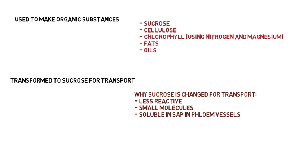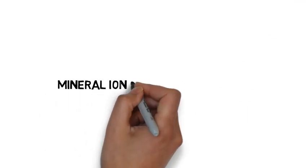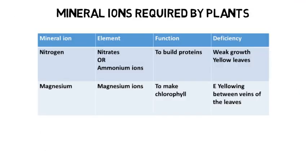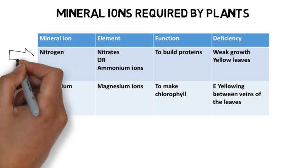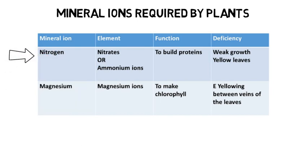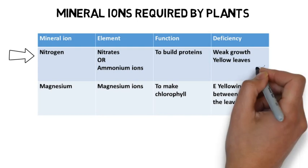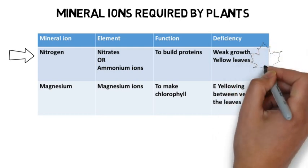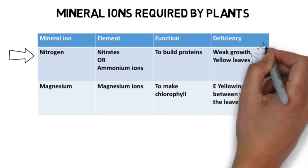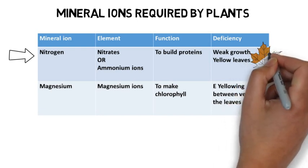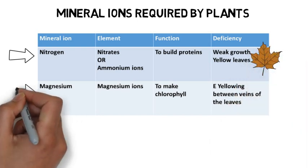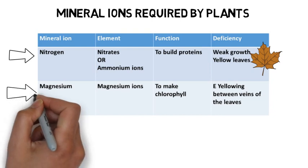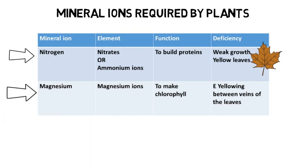Mineral ions required by plants. The mineral ion nitrogen, in the form of nitrates or ammonium ions, has the function of building proteins, but deficiency causes weak growth and yellow leaves. Magnesium ions are used to make chlorophyll, but deficiency causes yellowing between the veins of the leaves.